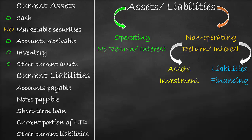Accounts payable means the company buys raw material on credit and will pay the money in the future. The company does not pay any interest on accounts payables. Therefore, accounts payables is an operating current liability. Notes payables means the company borrows from another company. The company pays interest on notes payables. Therefore, notes payables is a non-operating current liability. Short-term loans means the company borrows a short-term loan from a bank. The company pays interest on short-term loans. Therefore, short-term loans is a non-operating current liability.